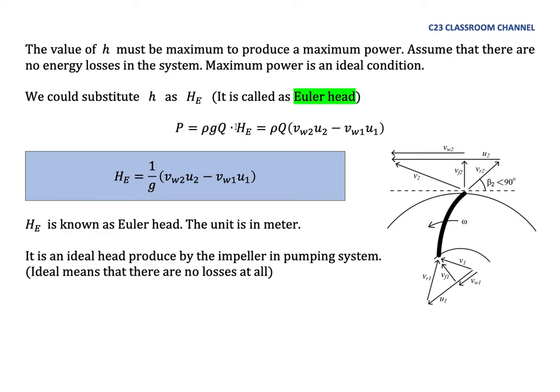Then we could mention that Euler head here, HE, is equal to 1 over G, which G is the gravity, 1 over G, V world 2, U2 minus V world 1, U1. And Euler head, HE here is known as Euler head. The unit is in meters. So this is an ideal head produced by the impeller in pumping system.